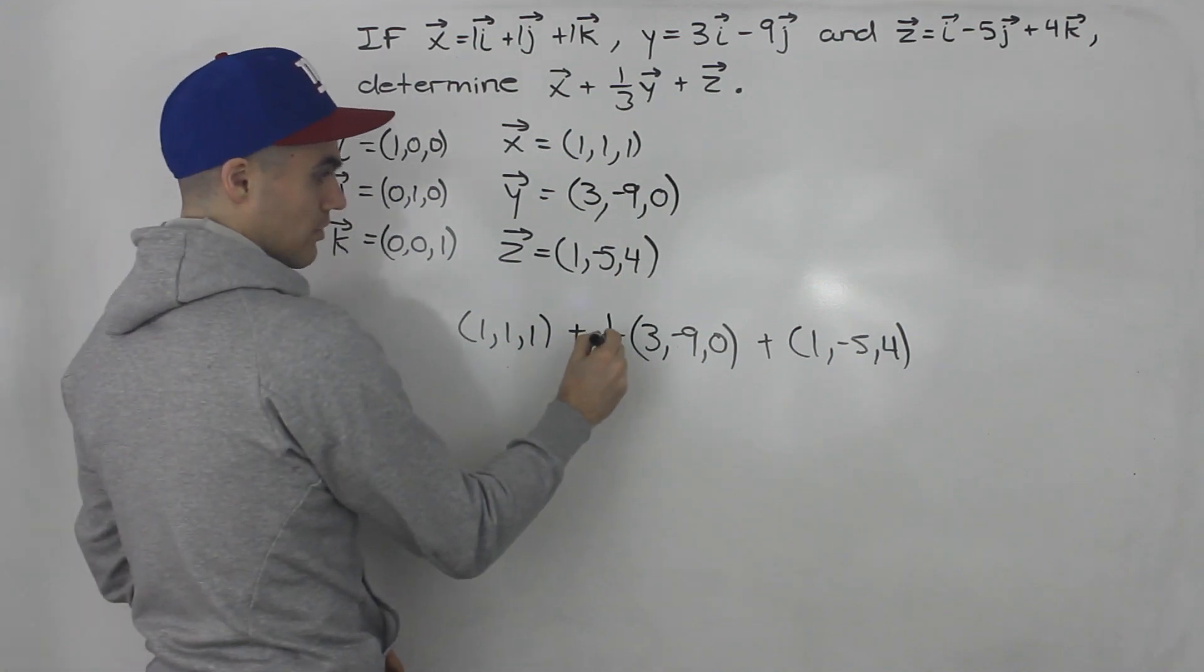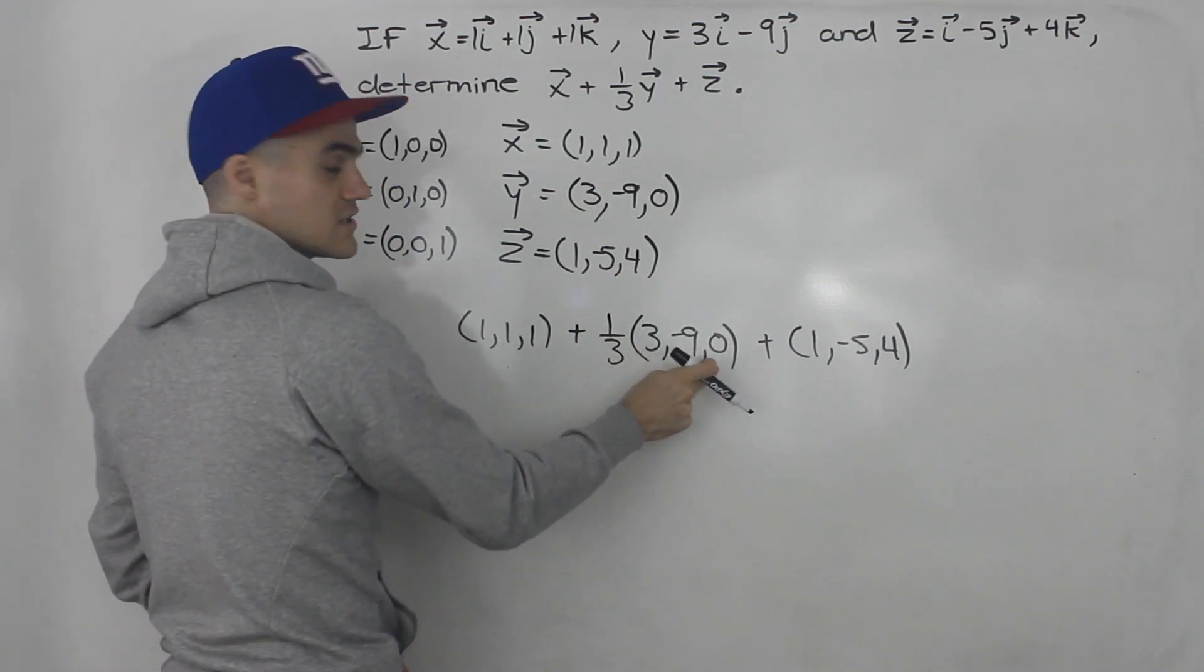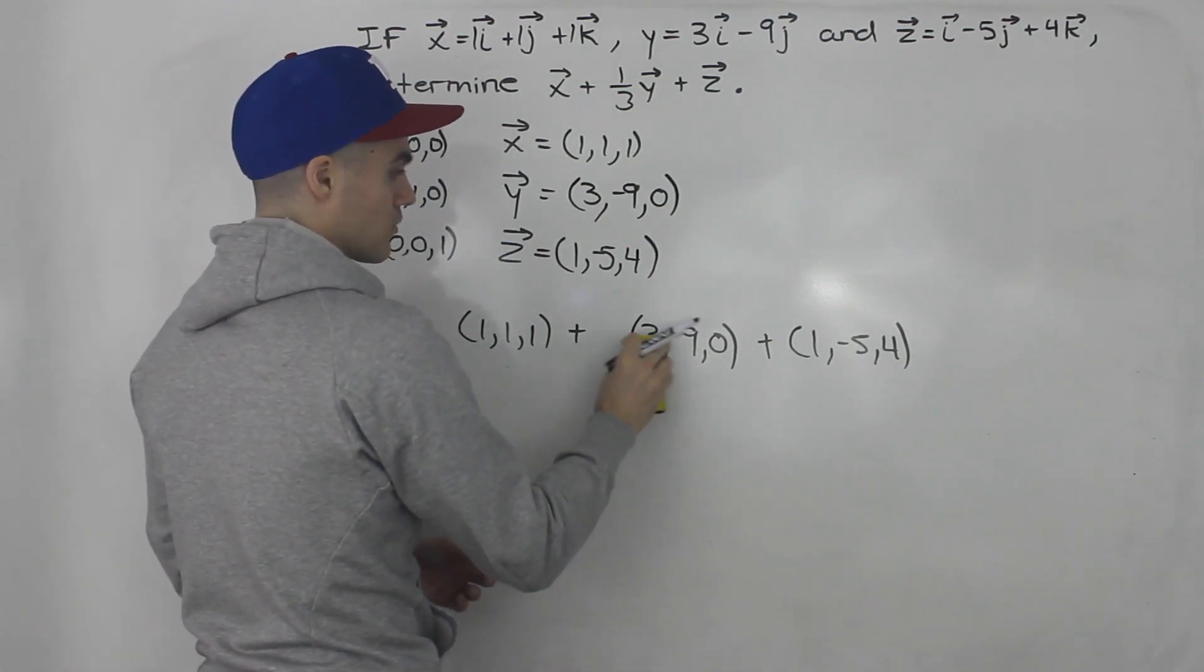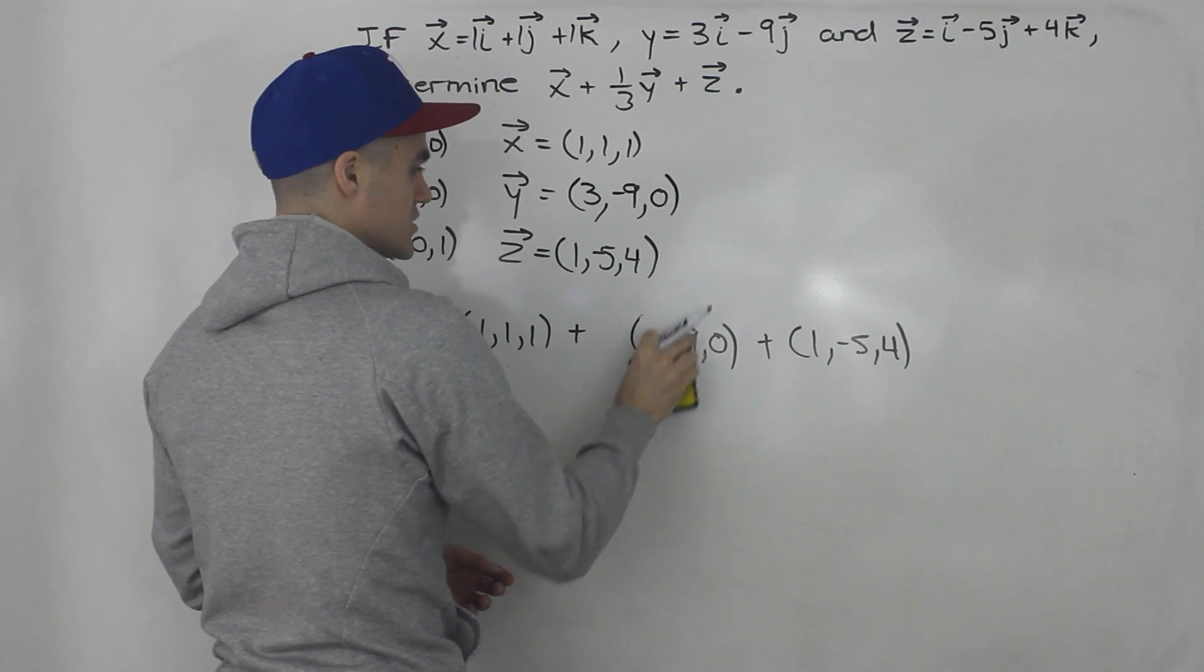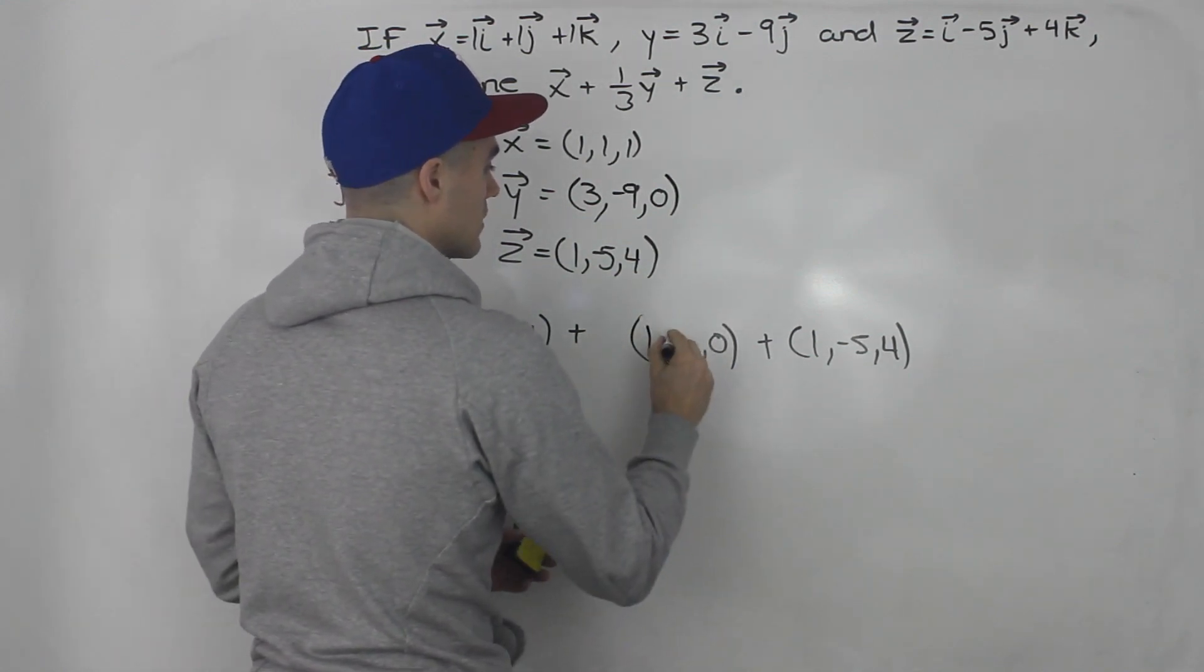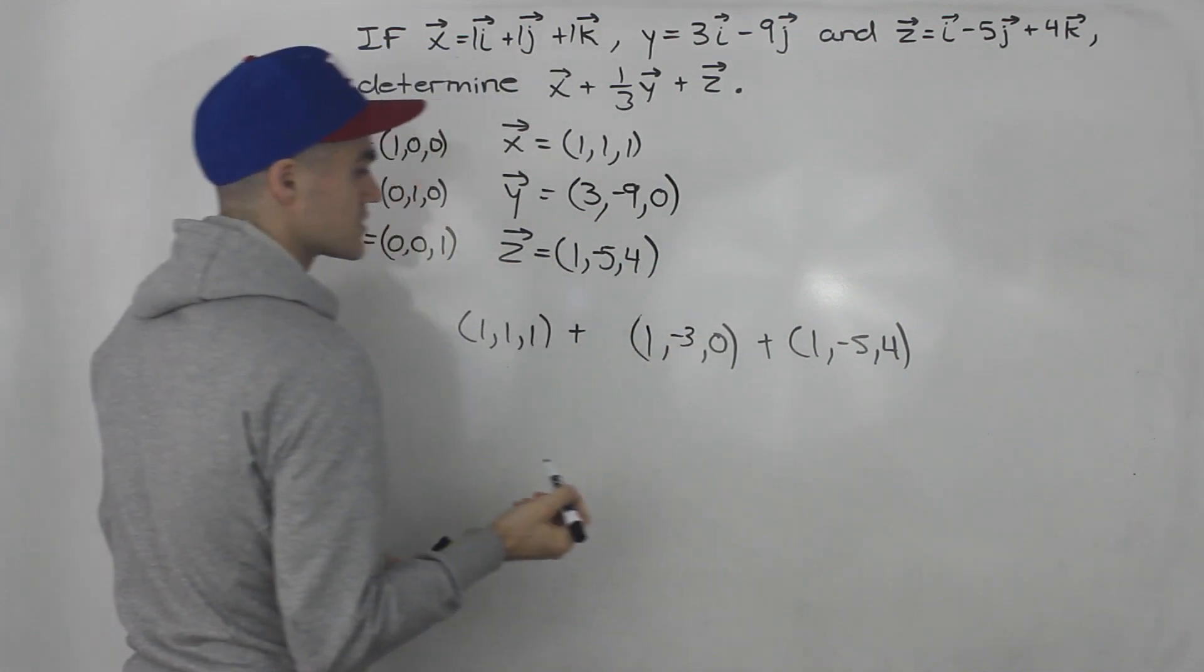And now notice this 1 third. We can multiply each of these coordinates by 1 over 3. So we can get rid of this. 1 over 3 times 3 is just 1. 1 over 3 times negative 9 is negative 3. And then 1 over 3 times 0 is just 0.